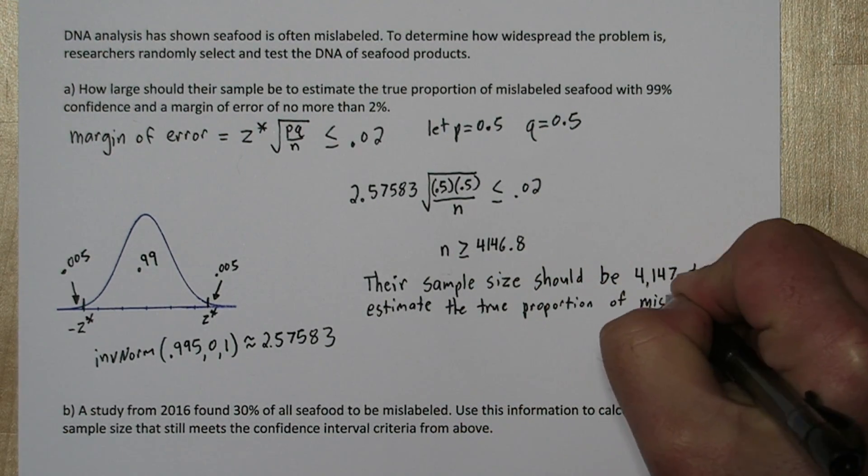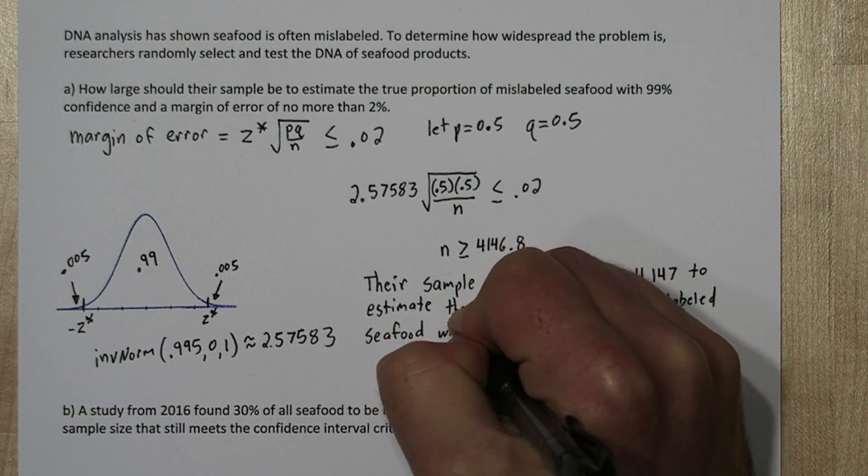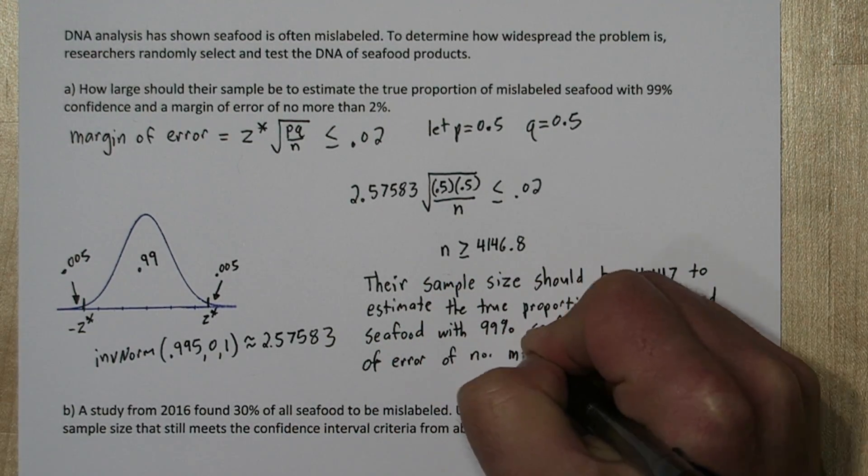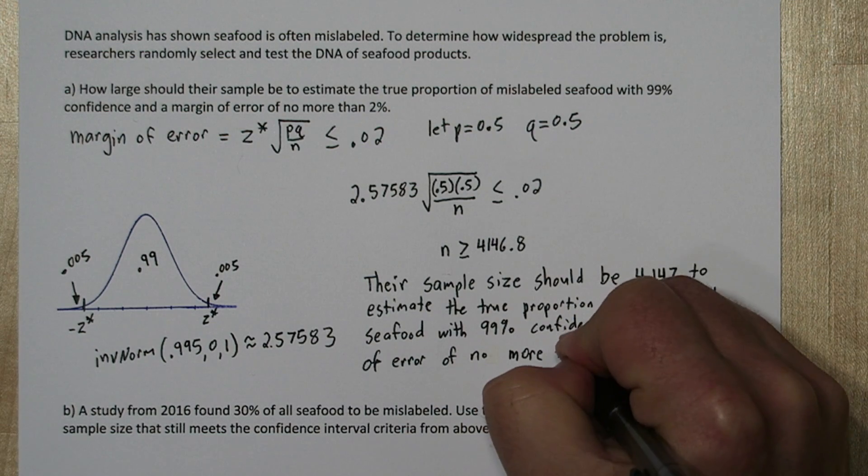Their sample size should be 4,147, to estimate the true proportion of mislabeled seafood with 99% confidence and a margin of error of no more than 2%.